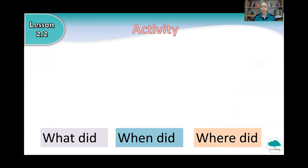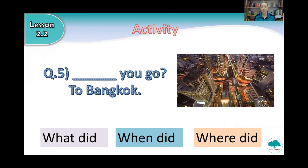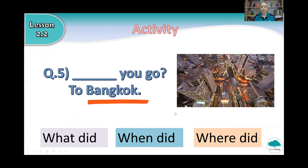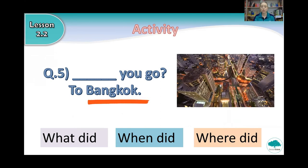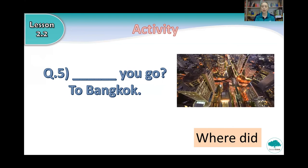Next question. You need to answer with what did, when did, or where did. Question five: something you go — and the answer is to Bangkok. If the answer is a place, do you remember what we use? Do we use what, when, or where when we talk about a place? That's right. We say where did when we talk about a place. So where did you go? To Bangkok.